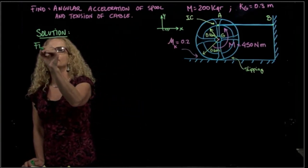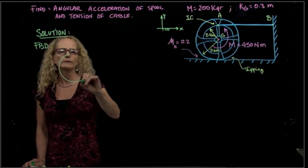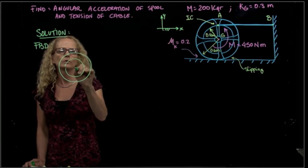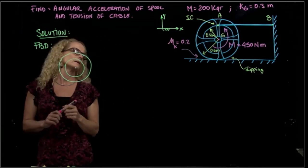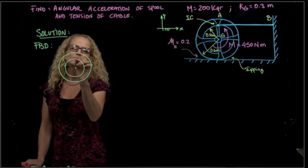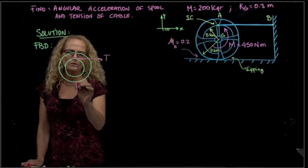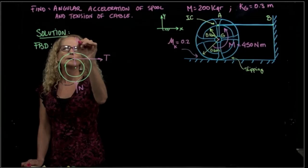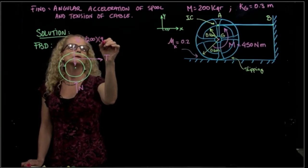The free body diagram will be, I will draw the spool like a wheel only, and let me draw the inside to be able to draw the tension. And then what do we have in this wheel? We have a tension right here. We have a normal force.